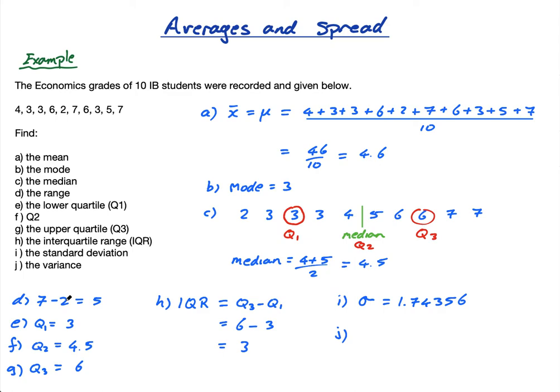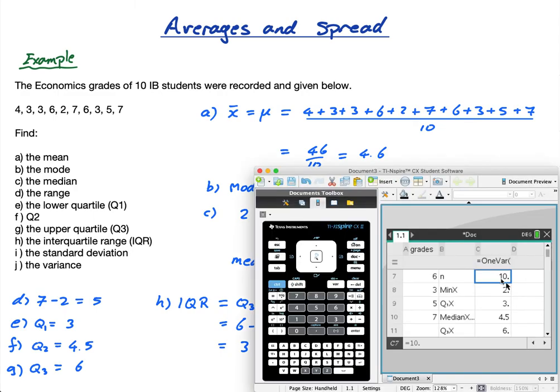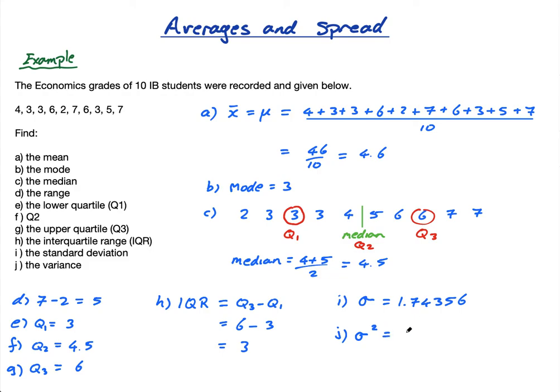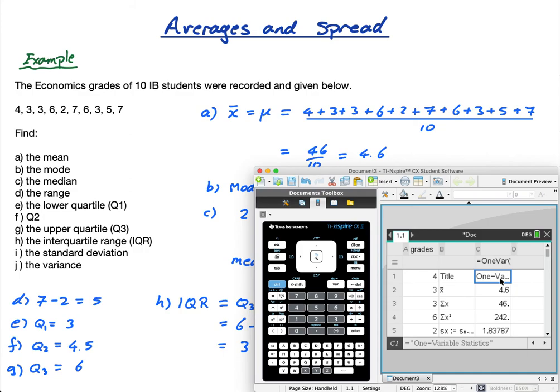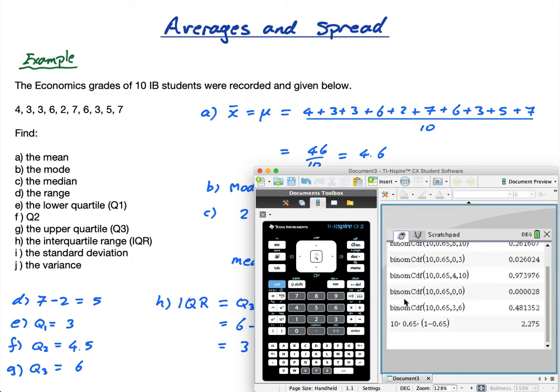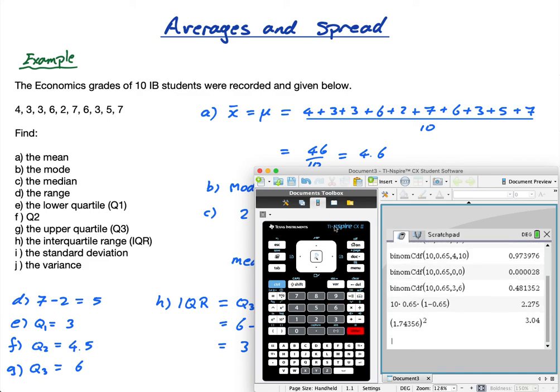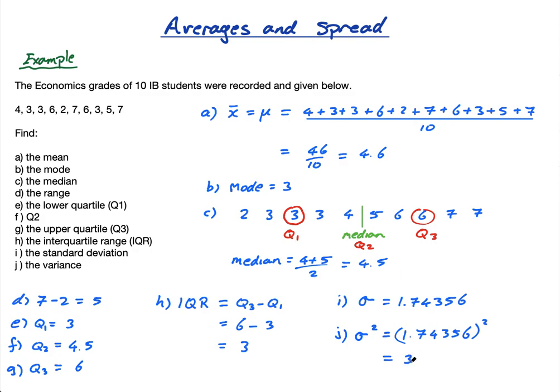Actually, sorry, I'm not finished. I didn't do the variance. So the variance is sigma squared. And this is important. So it doesn't give me the variance here. But the variance is just the standard deviation squared. So it's 1.74356 squared, which equals 3.04. So the variance is 3.04.